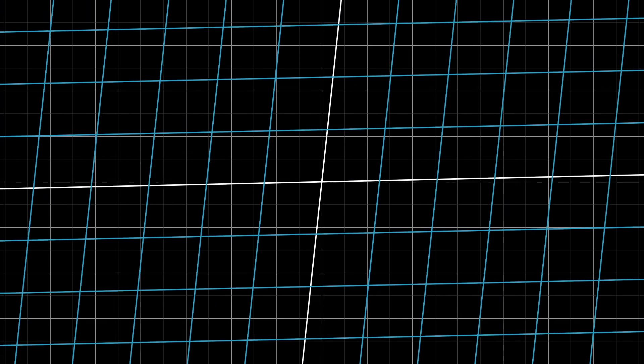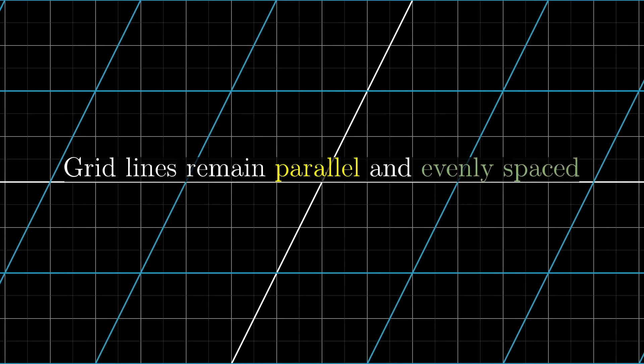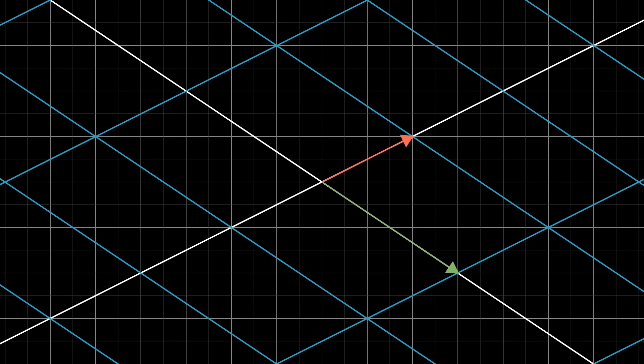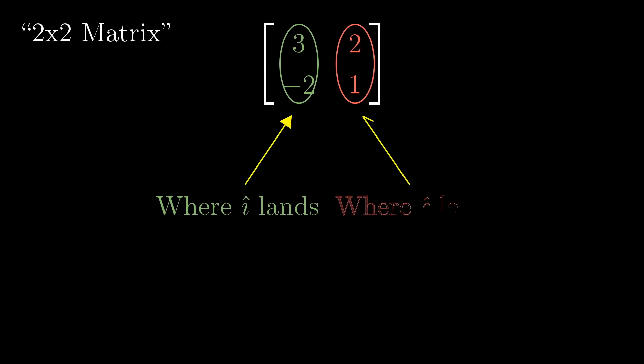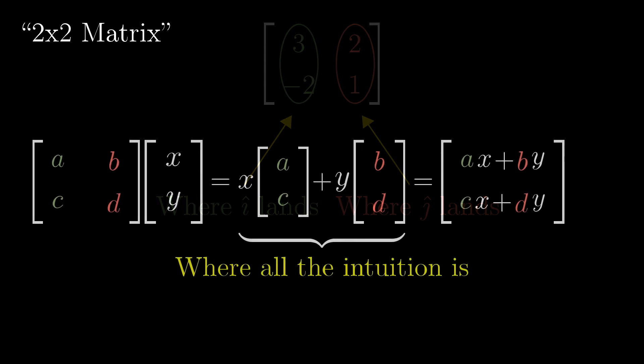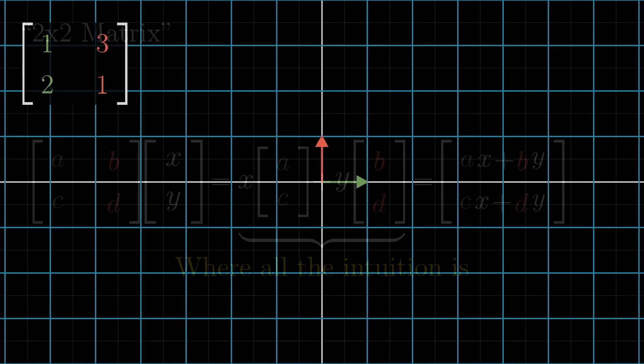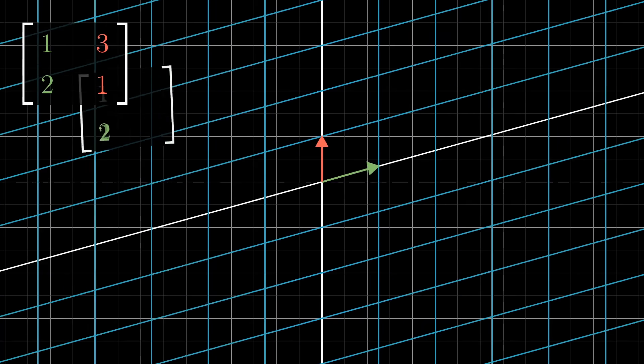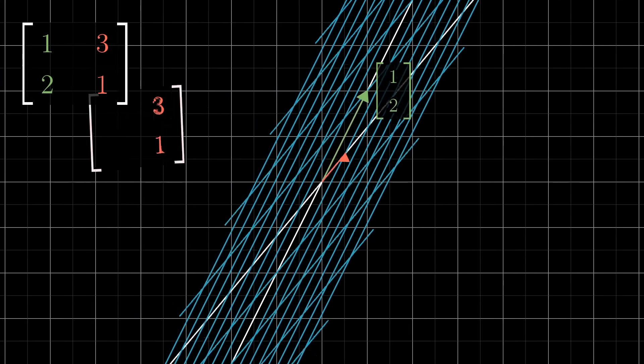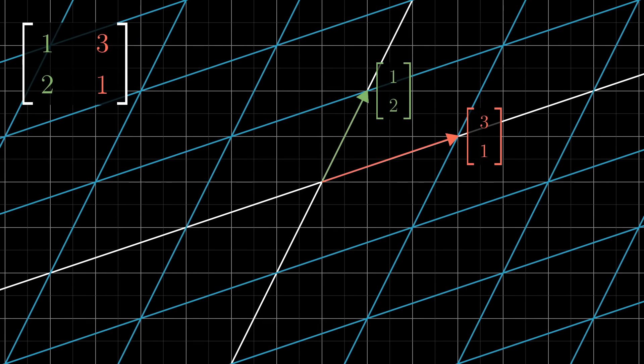To sum up, linear transformations are a way to move around space such that gridlines remain parallel and evenly spaced, and such that the origin remains fixed. Delightfully, these transformations can be described using only a handful of numbers, the coordinates of where each basis vector lands. Matrices give us a language to describe these transformations, where the columns represent those coordinates, and matrix vector multiplication is just a way to compute what that transformation does to a given vector. The important takeaway here is that every time you see a matrix, you can interpret it as a certain transformation of space. Once you really digest this idea, you're in a great position to understand linear algebra deeply.